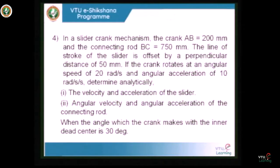Problem 4 of our discussion in Module 3 states that in a slider crank mechanism, the crank AB = 200 mm and the connecting rod BC = 750 mm. The line of stroke of the slider is offset by a perpendicular distance of 50 mm. The crank rotates at an angular speed of 20 radians per second and angular acceleration of 10 radians per second squared. Determine analytically the velocity and acceleration of the slider, angular velocity and angular acceleration of the connecting rod, when the crank makes an angle of 30 degrees with the inner dead center.